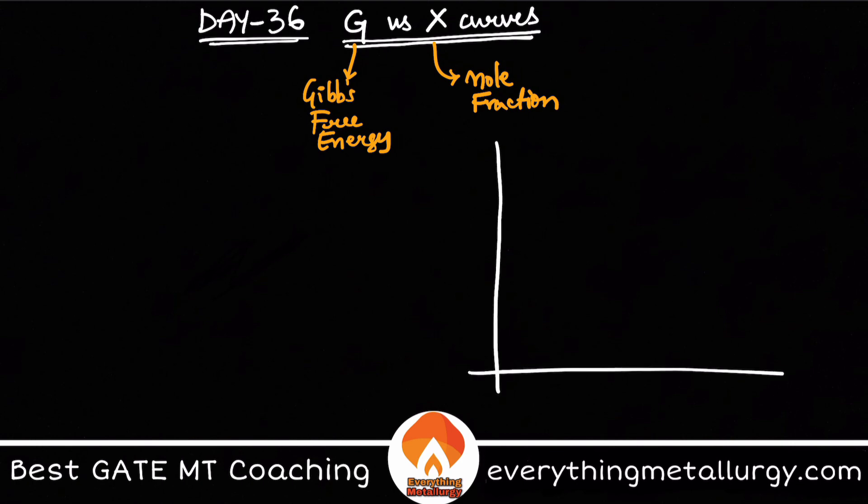So basically, how will this curve look like? G versus X curves are something like this where G is on the Y axis and X composition on the X axis. So let's say I have X varying from 0 to 1. So usually the curves will look something like this, which basically are called my cup-shaped curves.